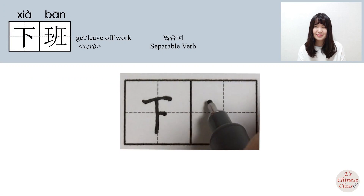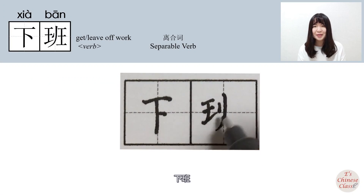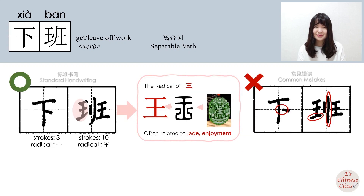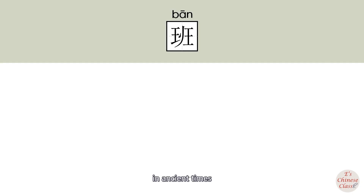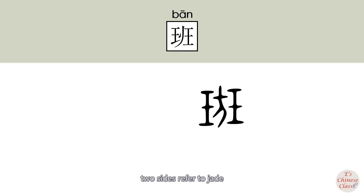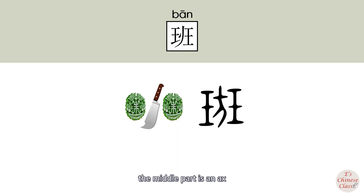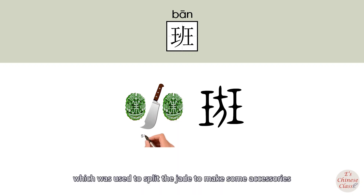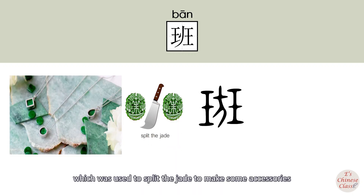下班. In ancient times, 班 was written with two sides referring to jade and a middle part that is an axe, which was used to split the jade to make some accessories. So the original meaning of this character is 'split'.